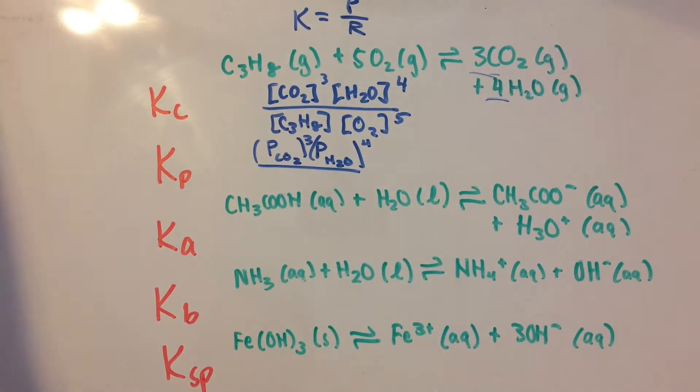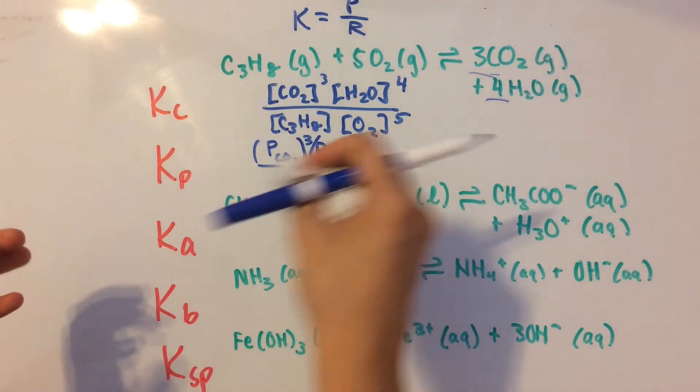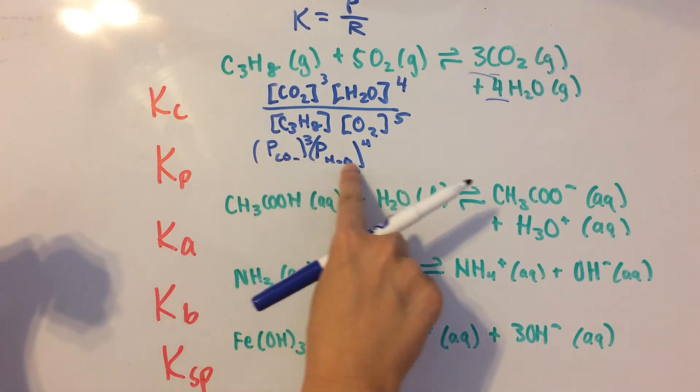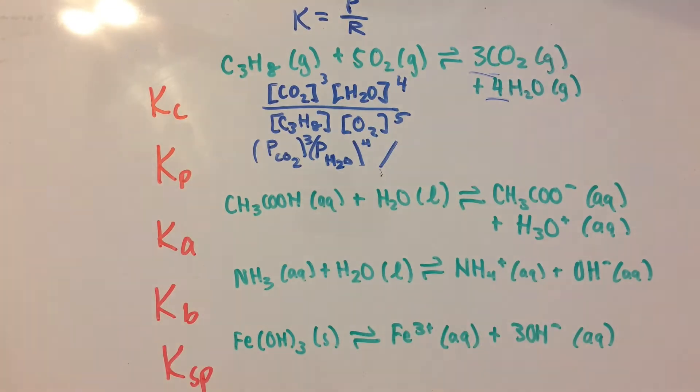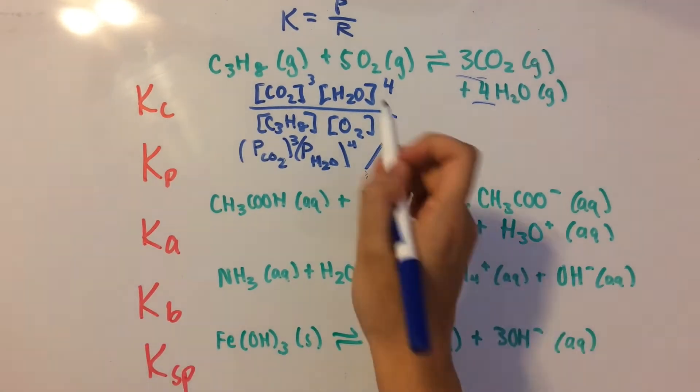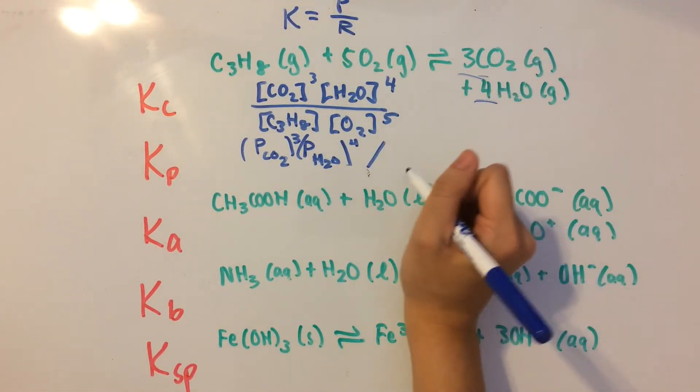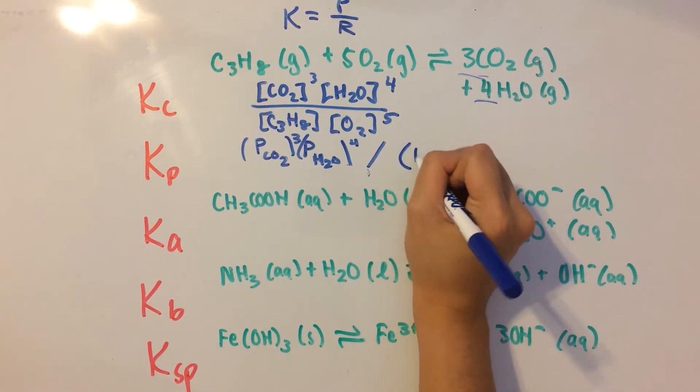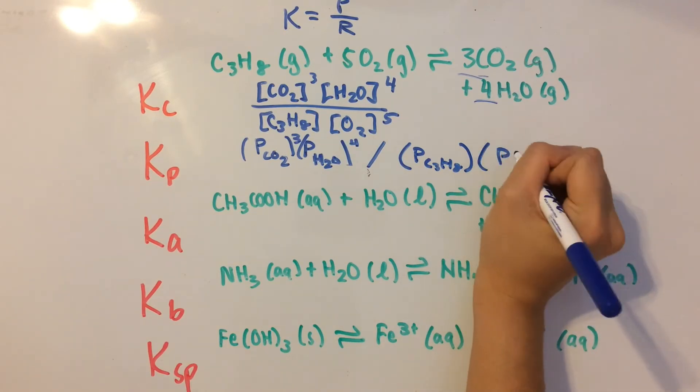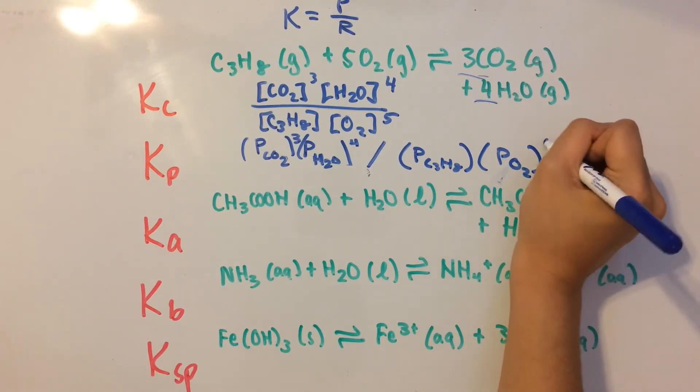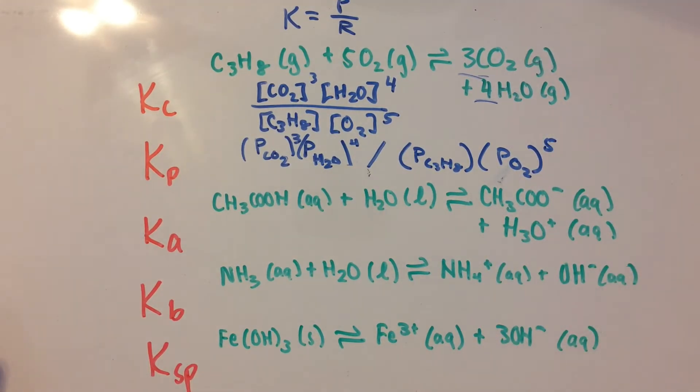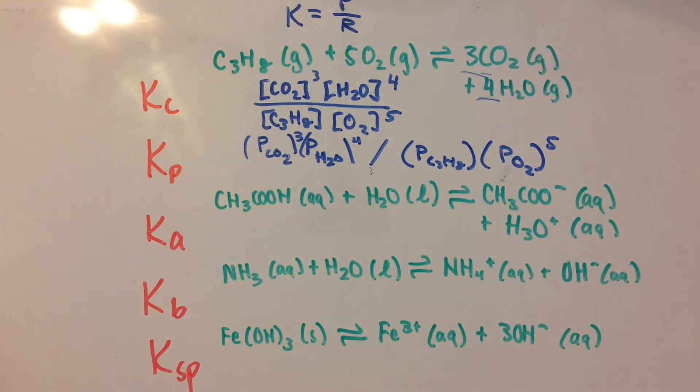Then, I'm sort of running out of room here, so let's just write it out like this. Okay, so now we have reactants on the bottom. We're going to have pressure of C3H8 times pressure of O2. And we're going to raise it to the fifth power because that's the coefficient. So that's going to be your equilibrium expression for Kp.